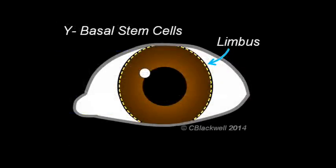Y. Basal cells come from a reservoir of stem cells located at the edge of the cornea, the corneal limbus. At the limbus, the stem cells divide and become basal cells which migrate horizontally toward the center of the cornea.